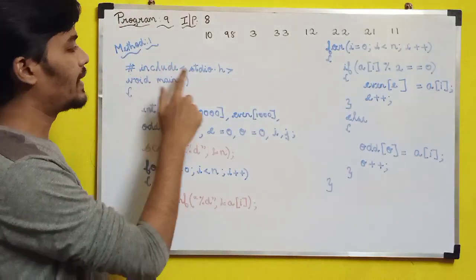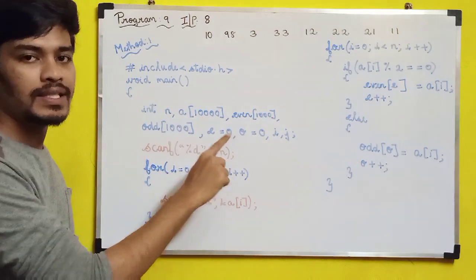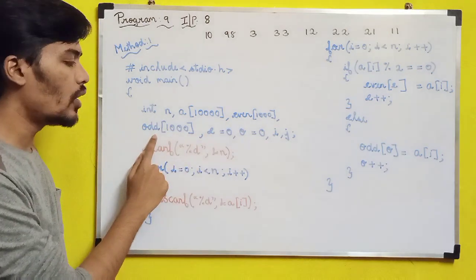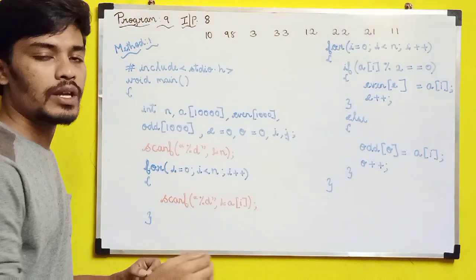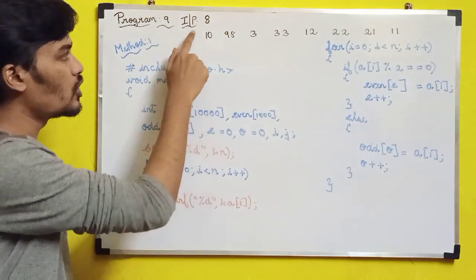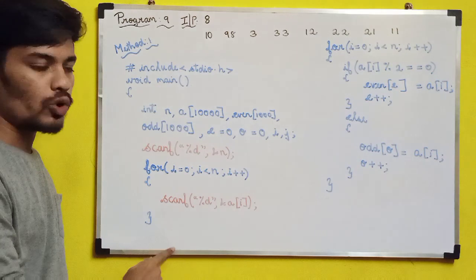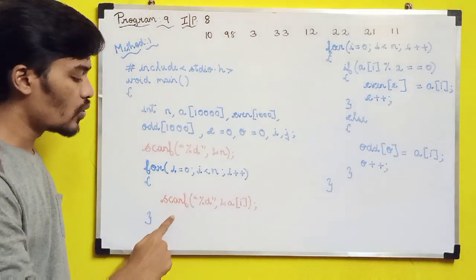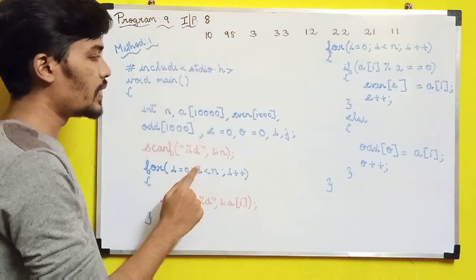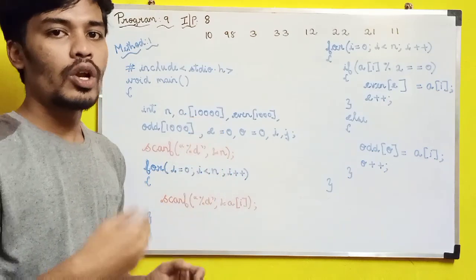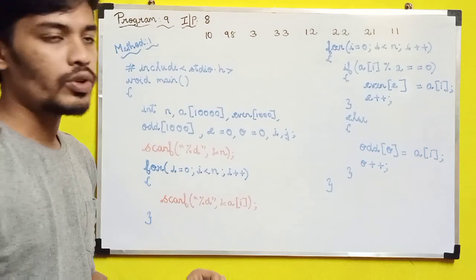For method 1: include the header file and declare void main. For input, declare int N and an array of length 10,000. For storing even and odd numbers separately, declare two more arrays: even and odd. Initialize index variables E equal to zero and O equal to zero, and loop variable I. Scan the value of N, then use a for loop — for I equal to zero, I less than N, I plus plus — to scan the array elements into array A.